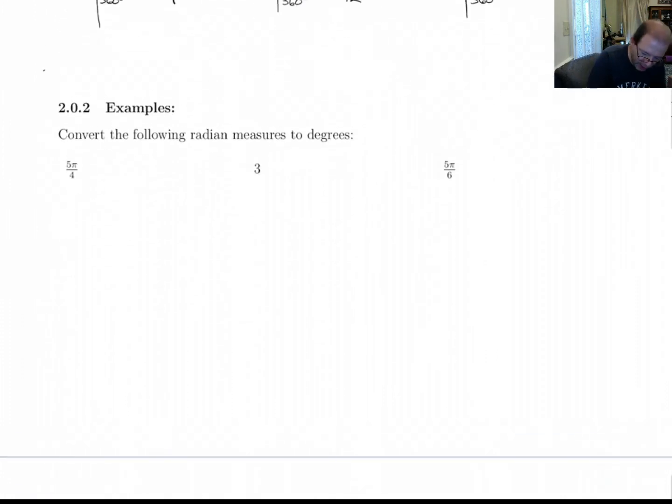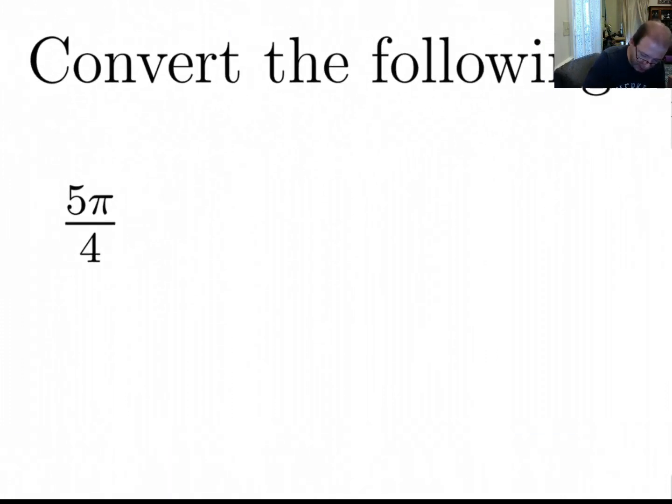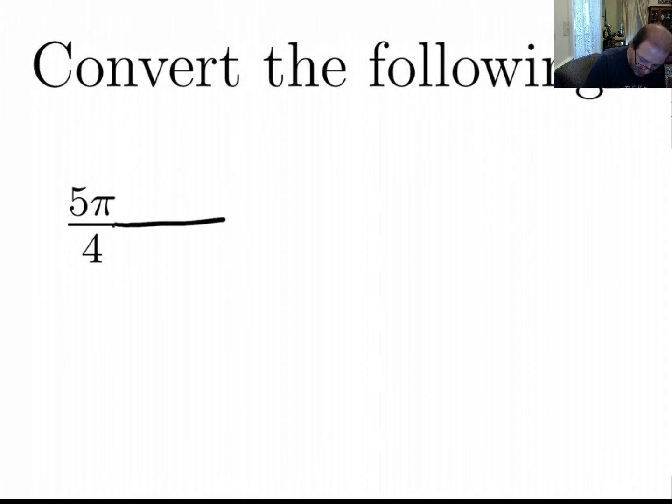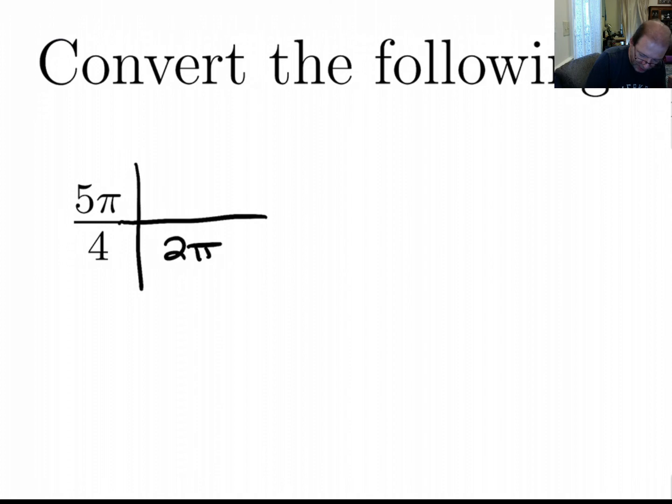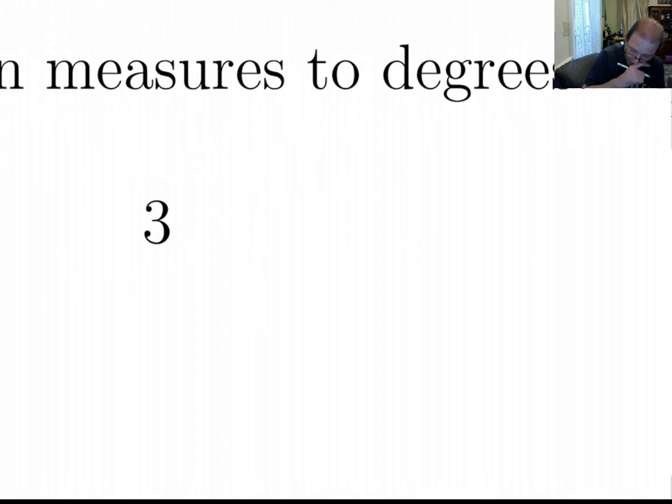And to convert the other way, you just multiply the other direction. 5π/4 radians. Let's see. That's going to be 2π radians under 360. So the π is canceled. You get 5 times 360 over 4 is 450 degrees.